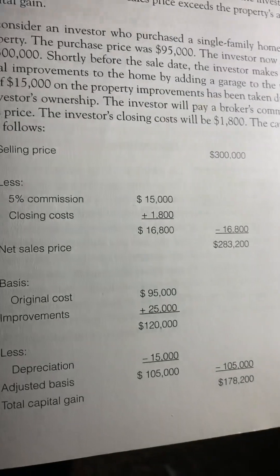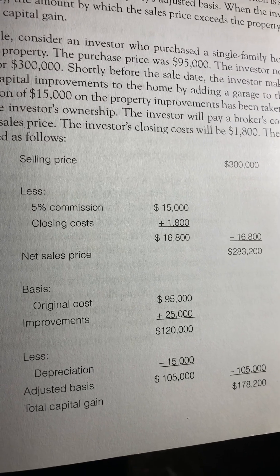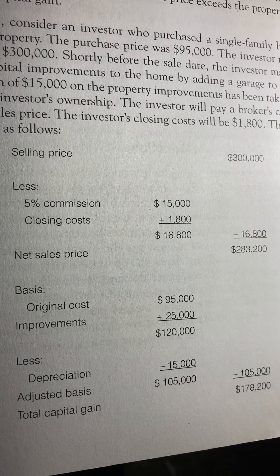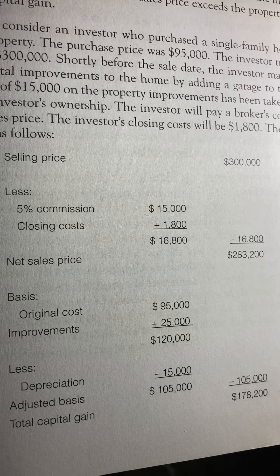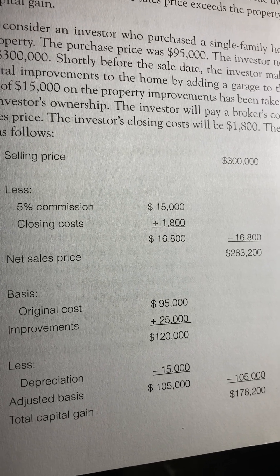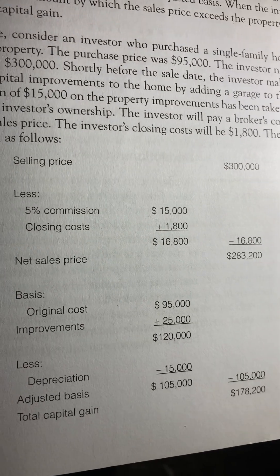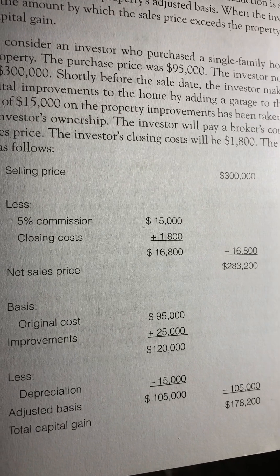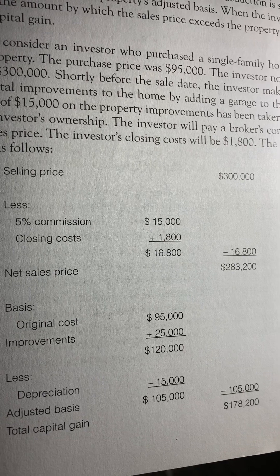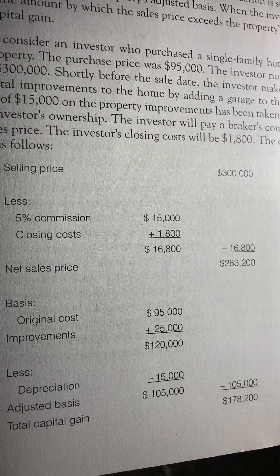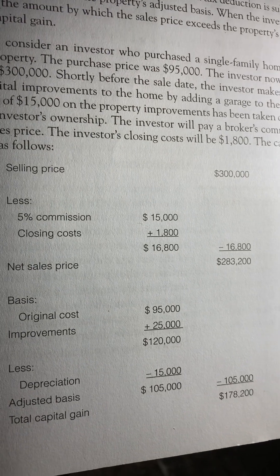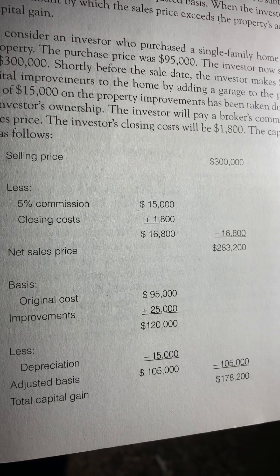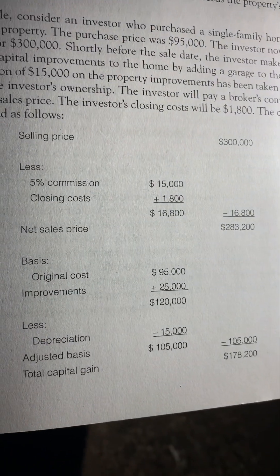The capital gain is computed as follows. Selling price: $300,000, less five percent commission ($15,000) plus closing costs ($1,800), equals $16,800 in selling costs. Subtracting $16,800 from the $300,000 selling price equals a net sales price of $283,200.